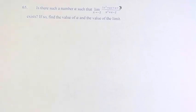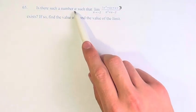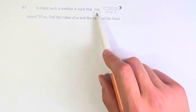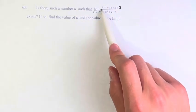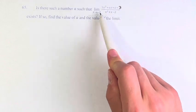Hello and welcome back to another video. In this problem, we're asked: is there such a number a such that the limit as x approaches negative 2 of this fraction, 3x squared plus ax plus a plus 3 over x squared plus x minus 2